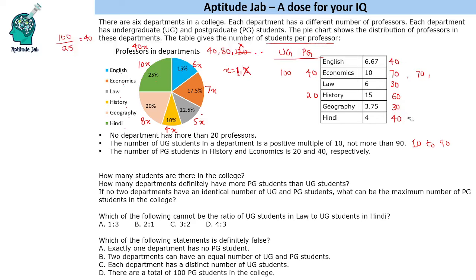These are the number of students in each department. Economics has 30 UG and 40 PG students. For the first question — how many students are there in the college — we simply add all the department totals: 110, 140, 200, 270...